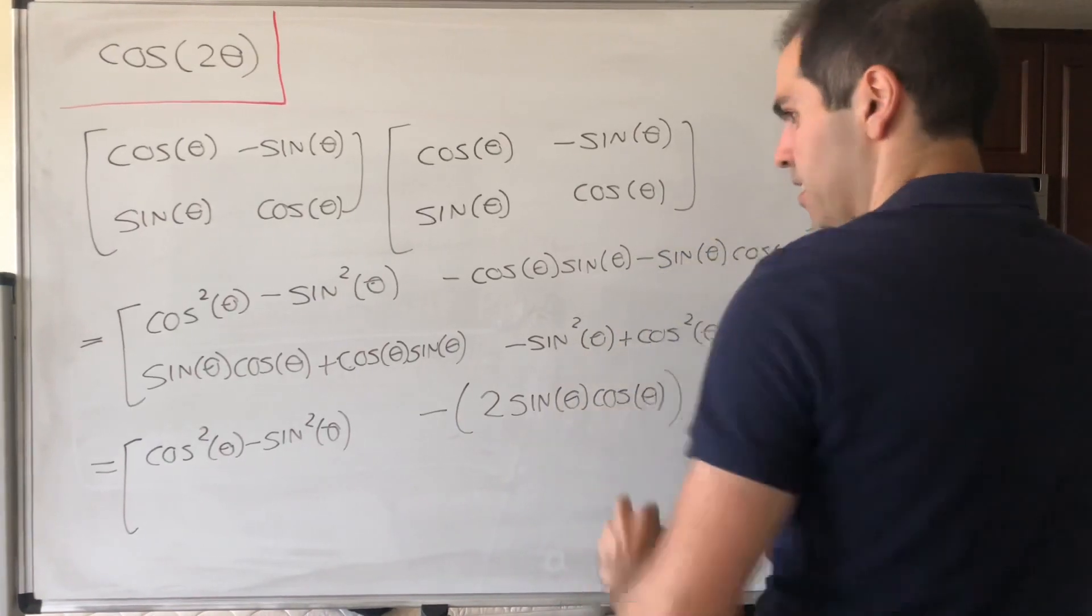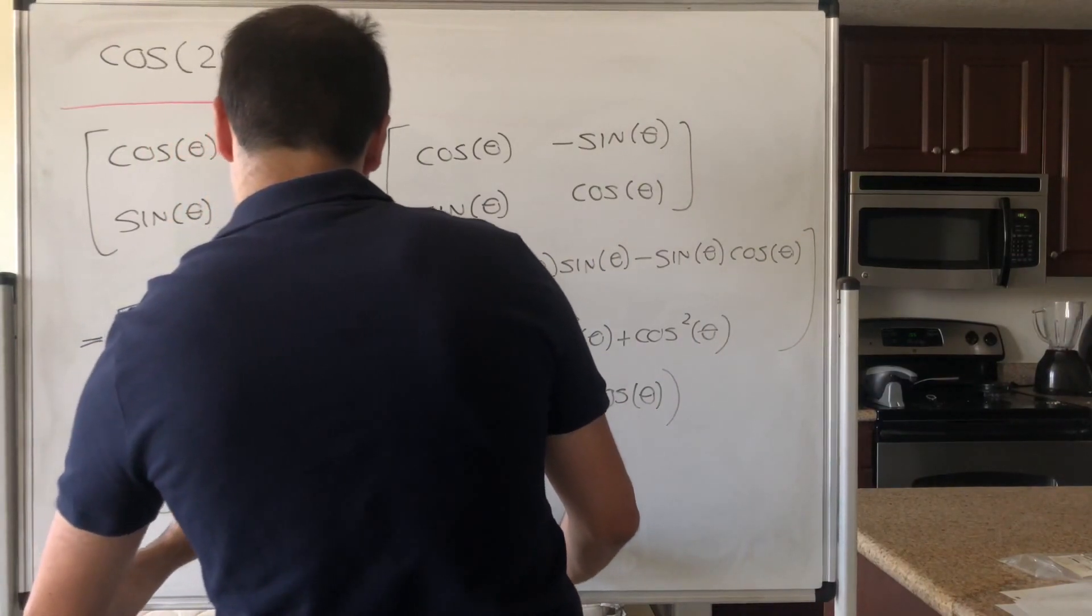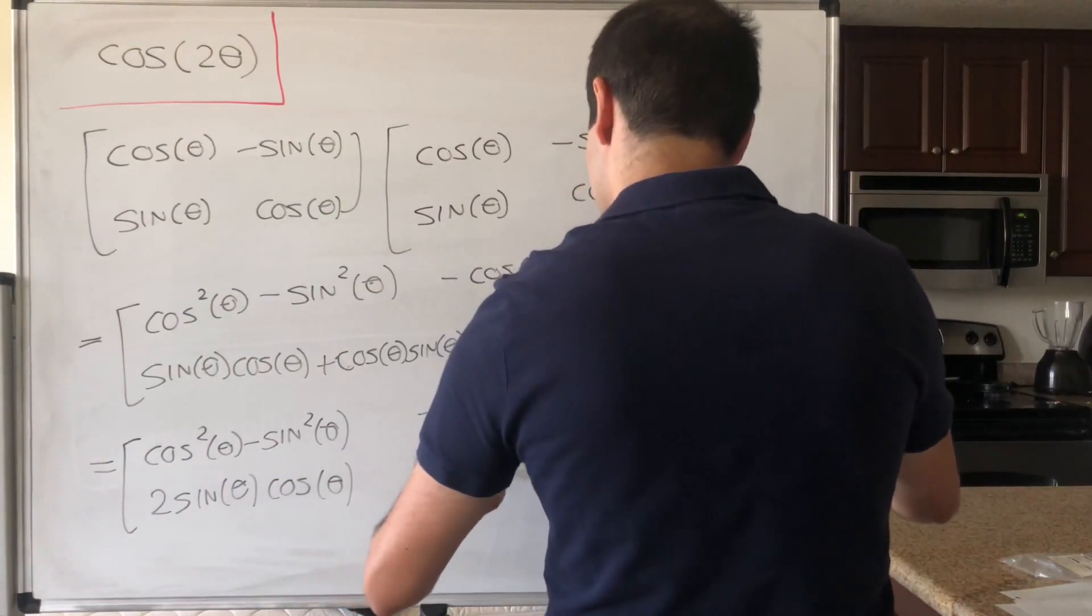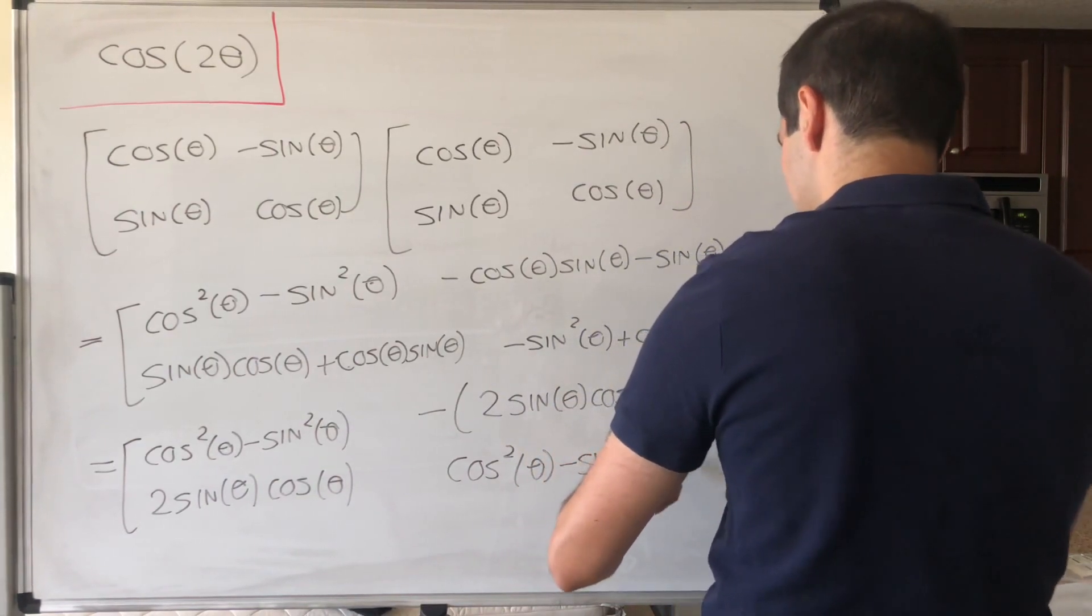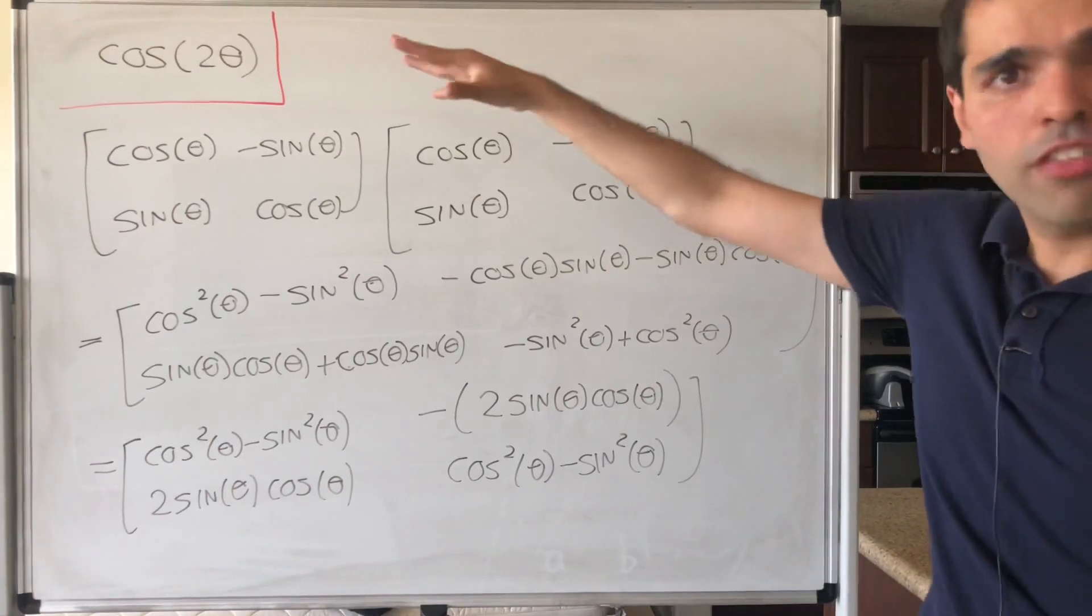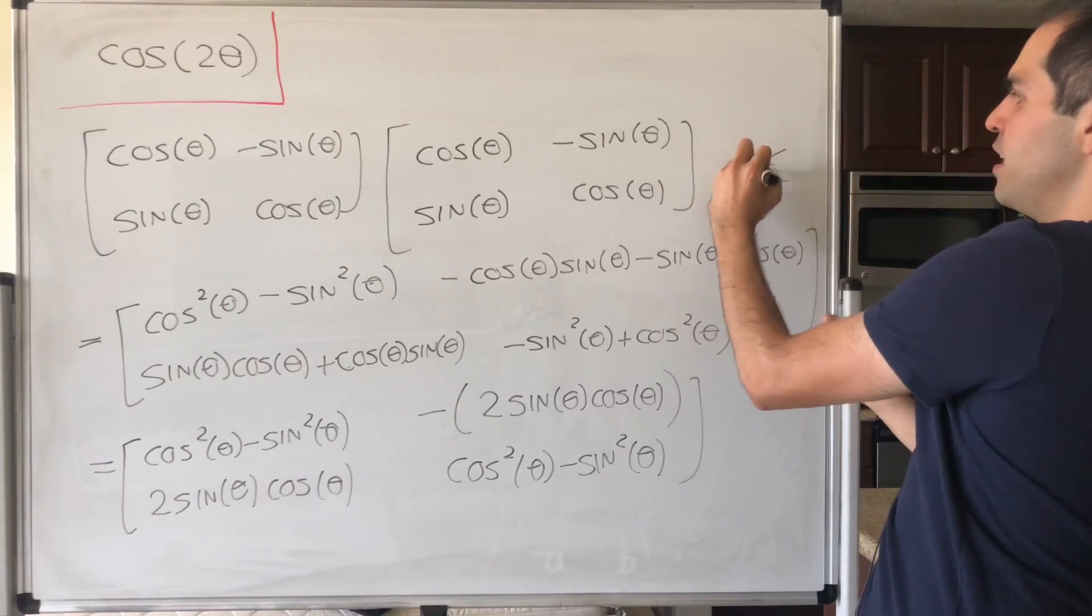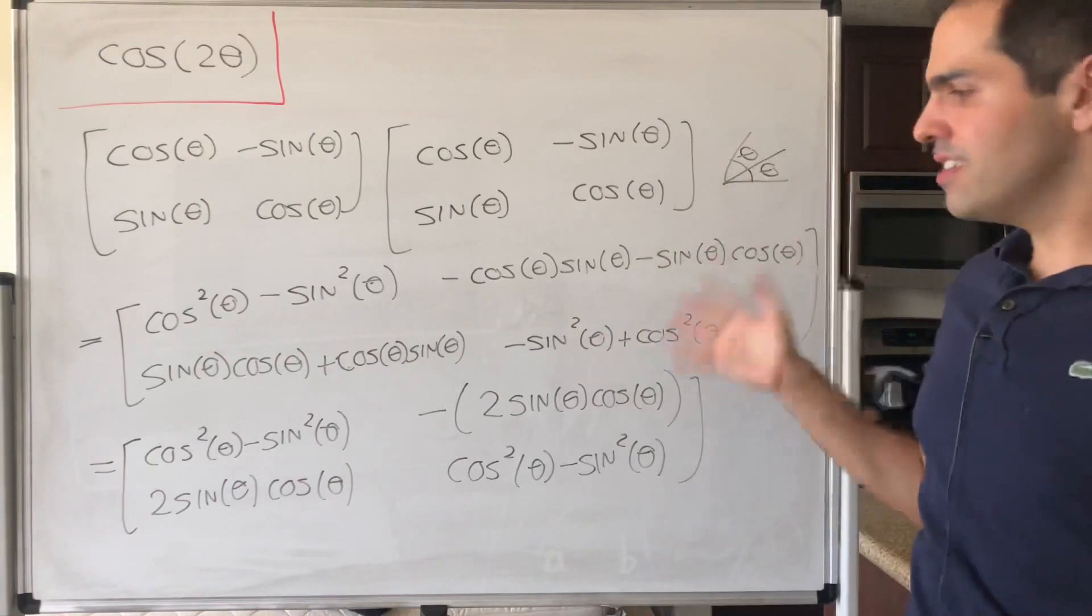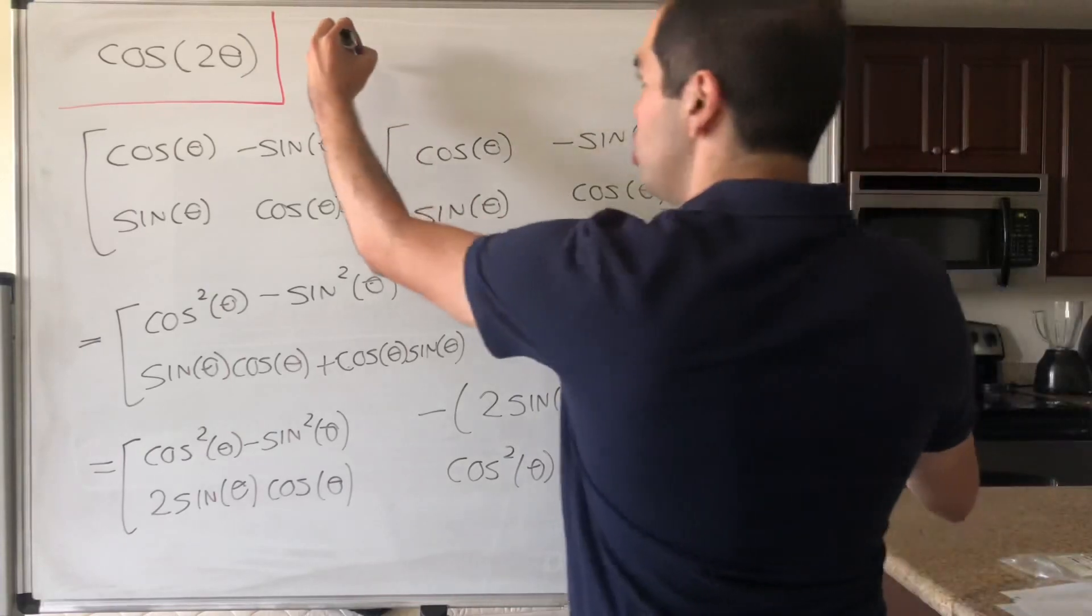Cosine squared of theta, cosine squared of theta. And then cosine squared of theta, minus sine squared of theta. So this is what happens when you multiply rotation by theta with rotation by theta. But here's the thing, what happens when you rotate by theta, and then rotate by theta again? Well, it's the same thing as rotating by two theta. So on the one hand, this gibberish, by definition,